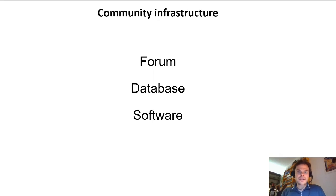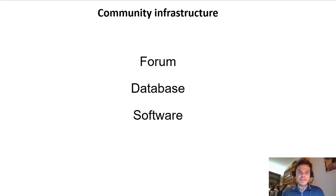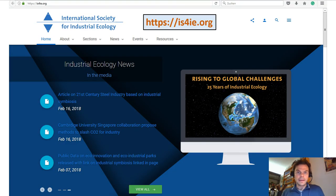Towards the end of this lecture, I want to show a few examples of community infrastructure that has evolved around industrial ecology methods. Infrastructure is important because it helps to exchange data and software, which speeds up research and increases overall quality. We have a forum on our web page where information is shared and questions and open issues can be posted — a good platform to stay connected with the community.